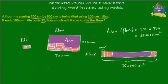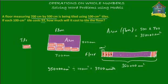You divide 350,000 centimeter square — the area of the floor — by 100 centimeter square, which is the area of one tile. That gives you how many tiles you will need to cover the floor. The answer is 3,500 tiles. So there will be a total of 3,500 tiles needed to cover the floor.